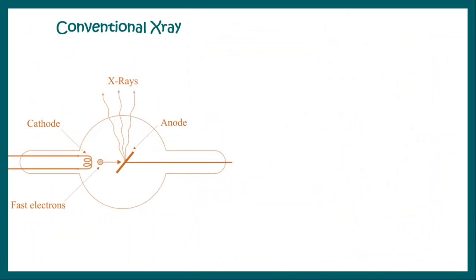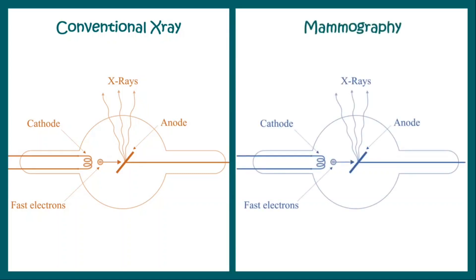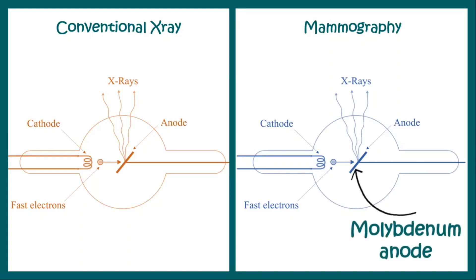In a conventional x-ray, we have an x-ray tube where from a cathode, we fire fast electrons towards an anode, and those electrons when they hit the anode release x-rays. In mammography, we utilize a similar mechanism, but how we generate low-dose x-rays is by means of using a molybdenum anode.